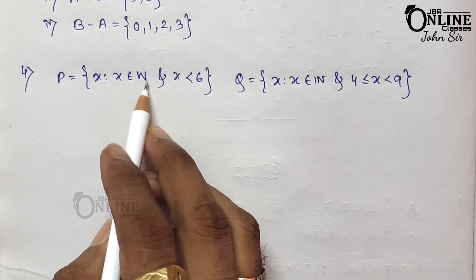Now verify A minus B = A intersection B complement. A minus B: elements of A not in B — removing 5, 6, 7 leaves {8, 9, 10}. A intersection B complement: B complement = {0, 1, 2, 8, 9, 10}, intersected with A = {8, 9, 10}. Left hand side equals right hand side. Also B minus A = {3, 4}, and B intersection A complement = {3, 4} — proved.